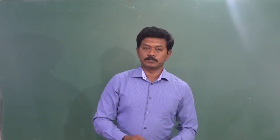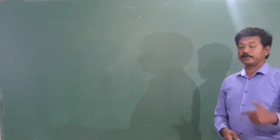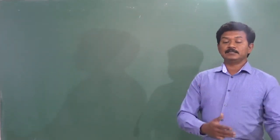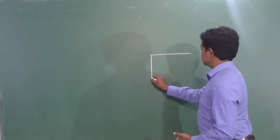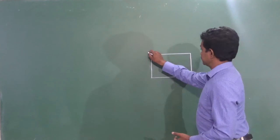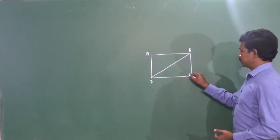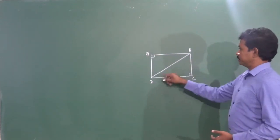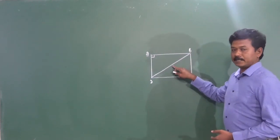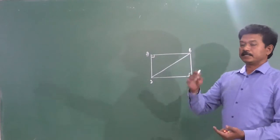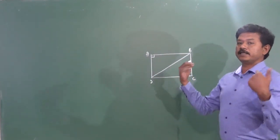The Baudhayana Sulabas Sutra states: the diagonal of a rectangle produces both areas which the length and breadth produce separately. Imagine a rectangle ABCD — if you take diagonal BD, and build a square on that diagonal, the area of that square is the sum of two areas: one area built by the length of the rectangle, and another area built by the breadth of the rectangle.